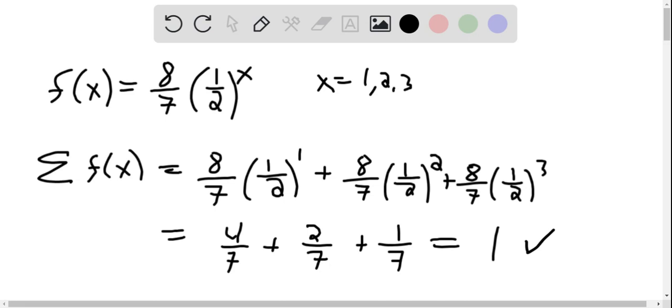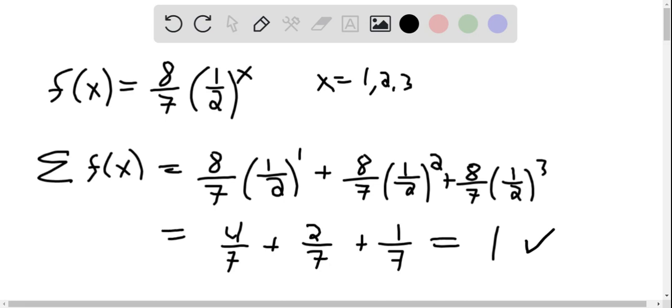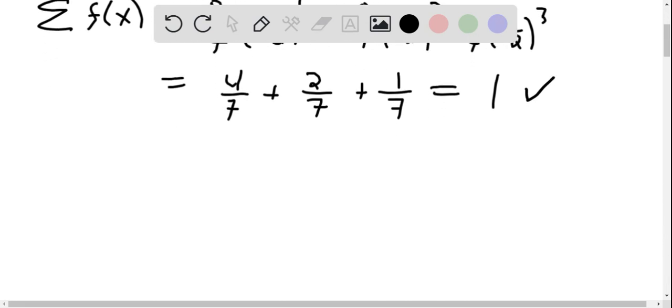Now let's find some probabilities here. On a, we want to find the probability that x is less than or equal to 1. Now the probability x is less than or equal to 1 is equal to the sum of all of the values where x is smaller than or equal to 1. Or there's only one of those. That is only when x is 1.